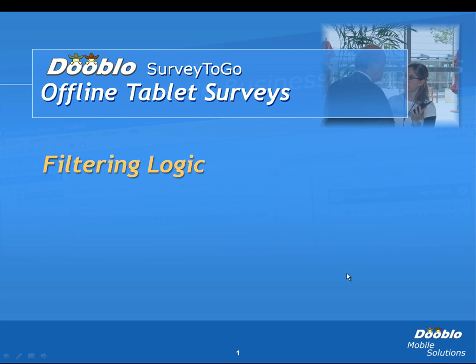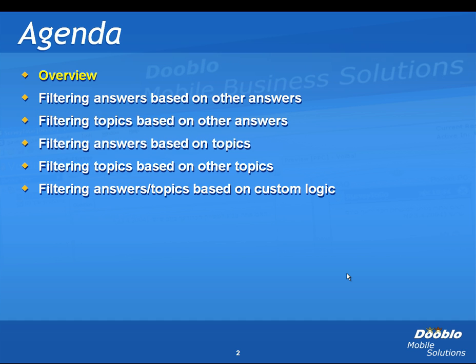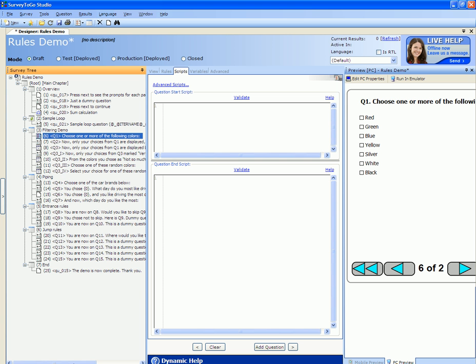In this video we're going to cover filtering logic. Filtering is used when you want to filter a set of answers or topics based on the answers to previous questions — for example, brands that you want to filter out based on a brand selected in previous questions, or any other sort of filtering. To demonstrate filtering, I'm going to use the rules demo survey and the PC preview emulator instead of the mobile preview.